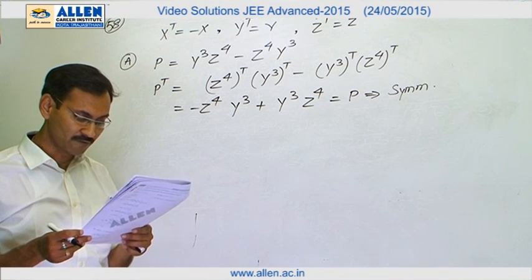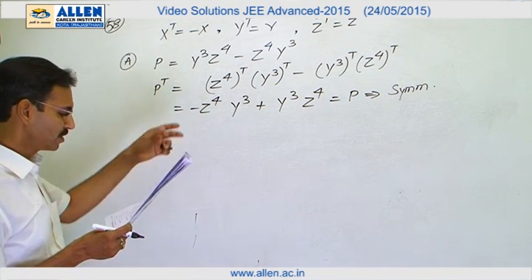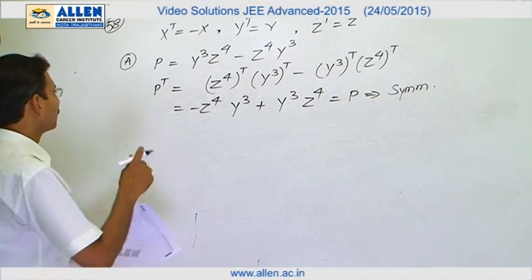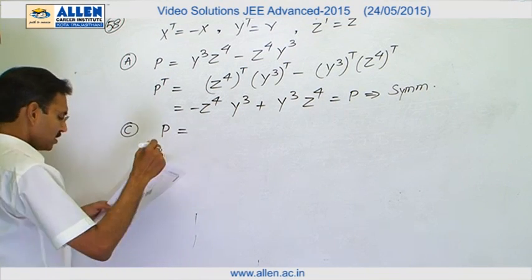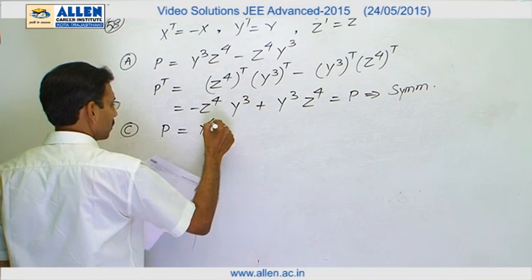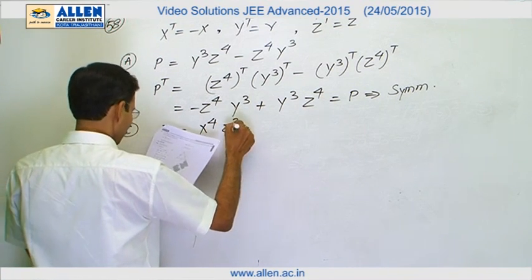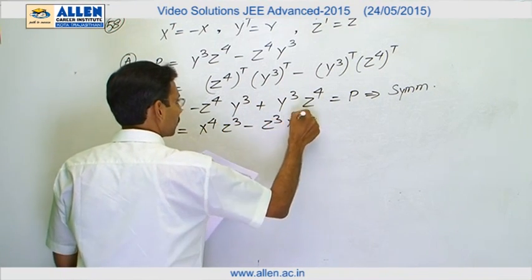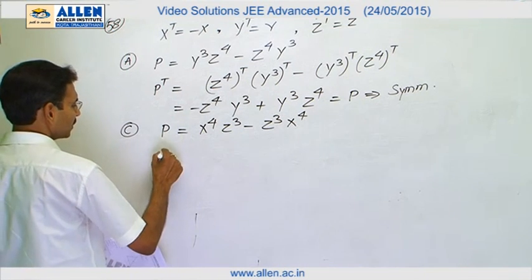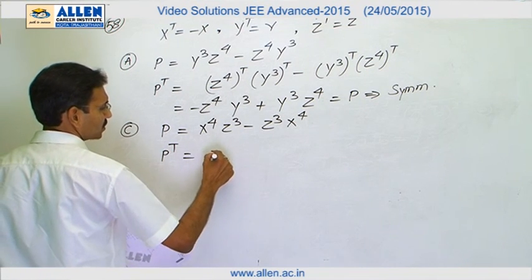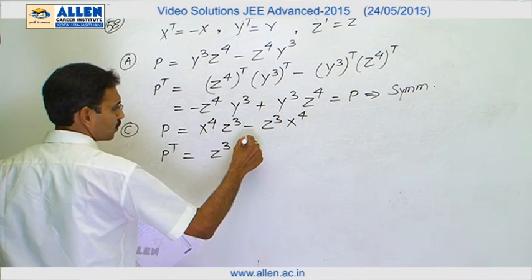So D is right. And for C, we will follow the similar procedure. We will have, we will say that P is equals to X^4 Z^3 minus Z^3 X^4. And we will take the transpose.